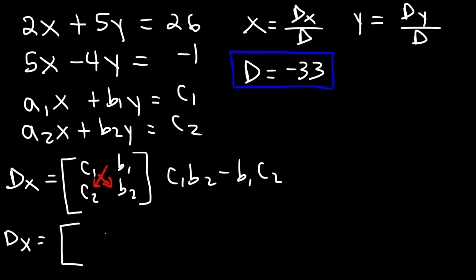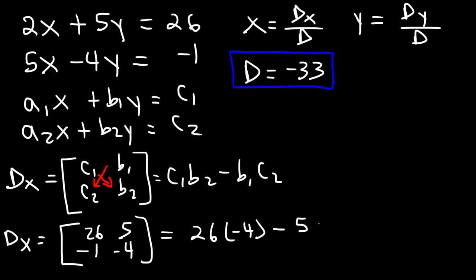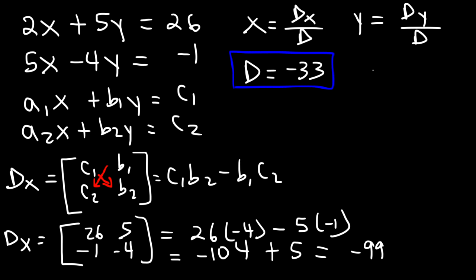In this problem c1 is 26, c2 is negative 1, b1 is 5, b2 is negative 4. So it's going to be 26 times negative 4, minus 5 times negative 1. 20 times 4 is 80, 6 times 4 is 24, so 26 times 4 is 104 — making it negative 104. Negative 5 times negative 1 is positive 5. Negative 104 plus 5 is negative 99. So dx is negative 99.